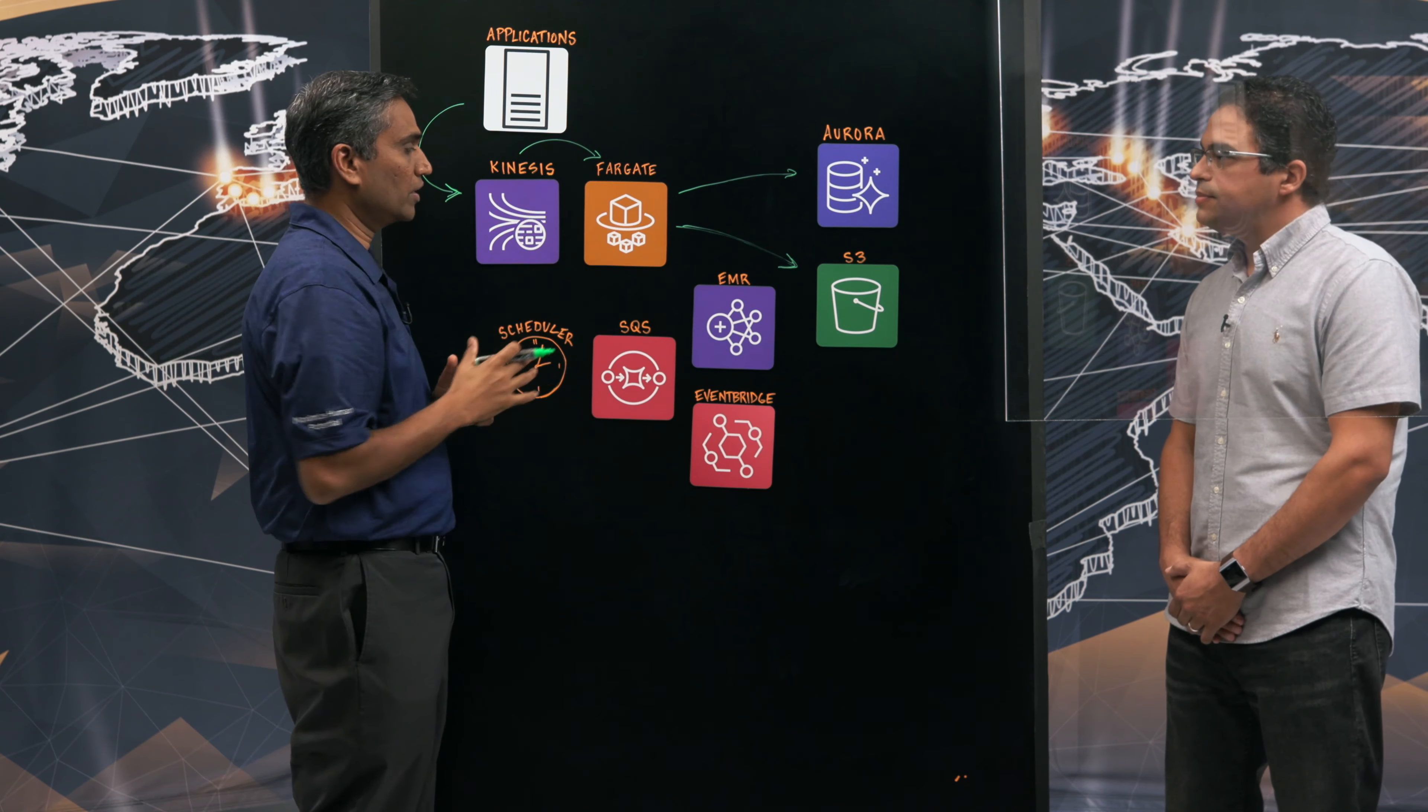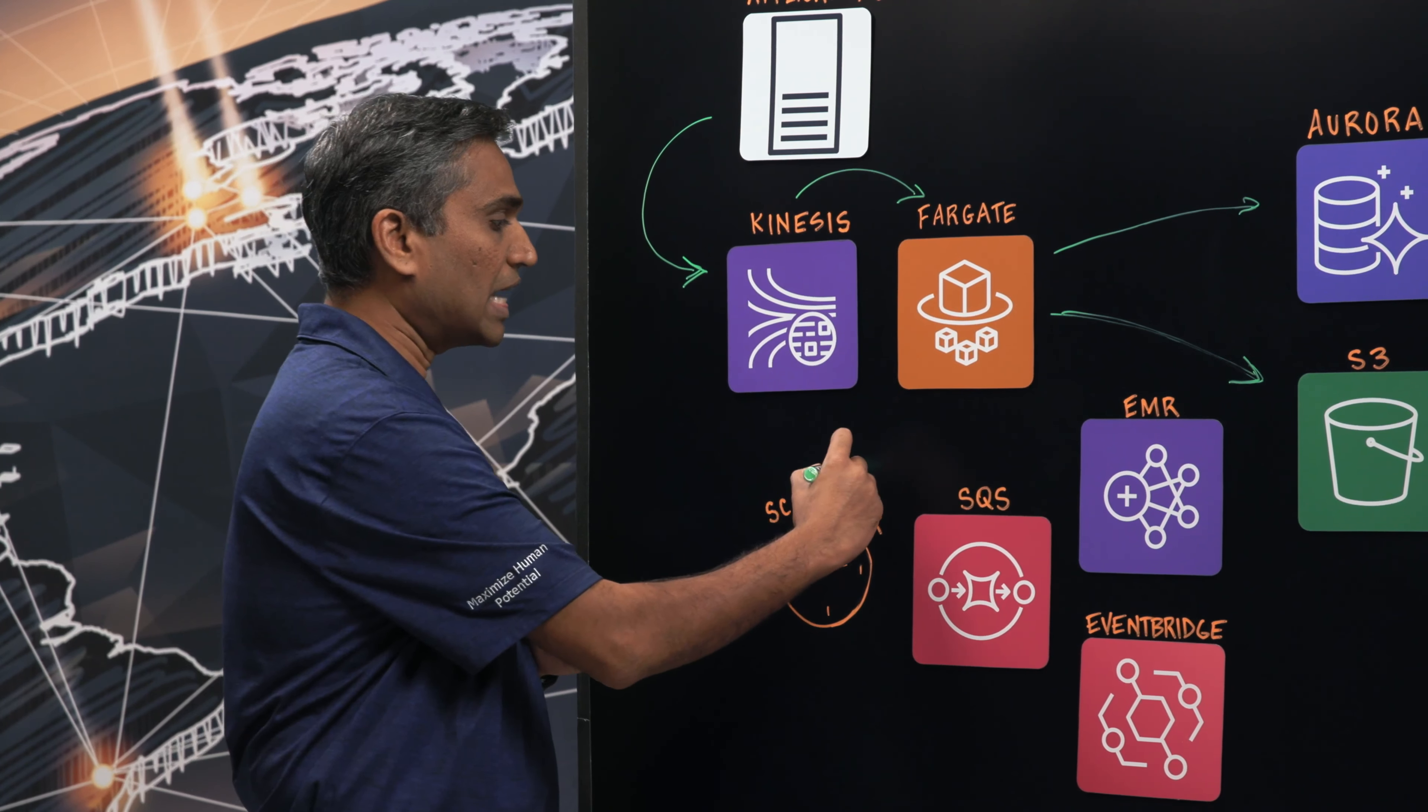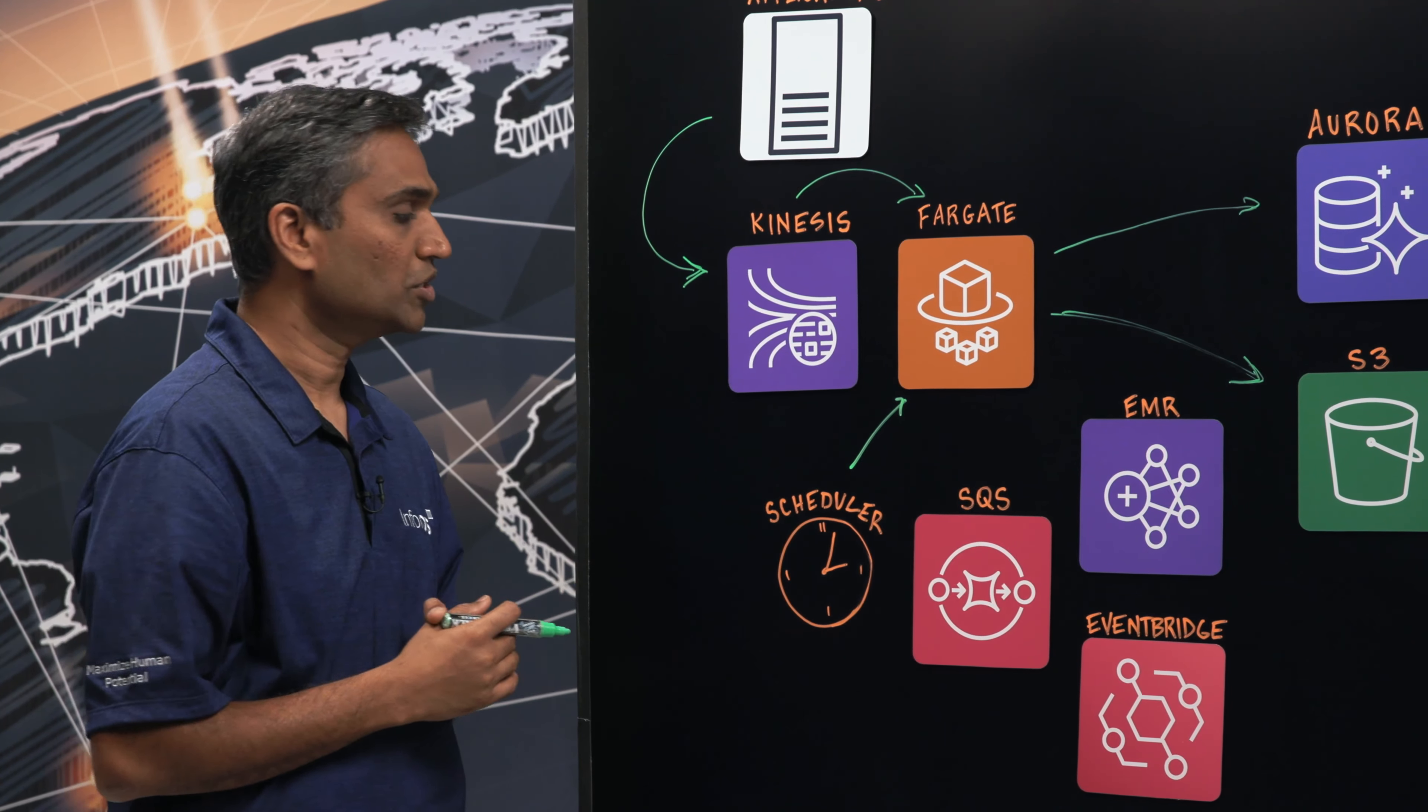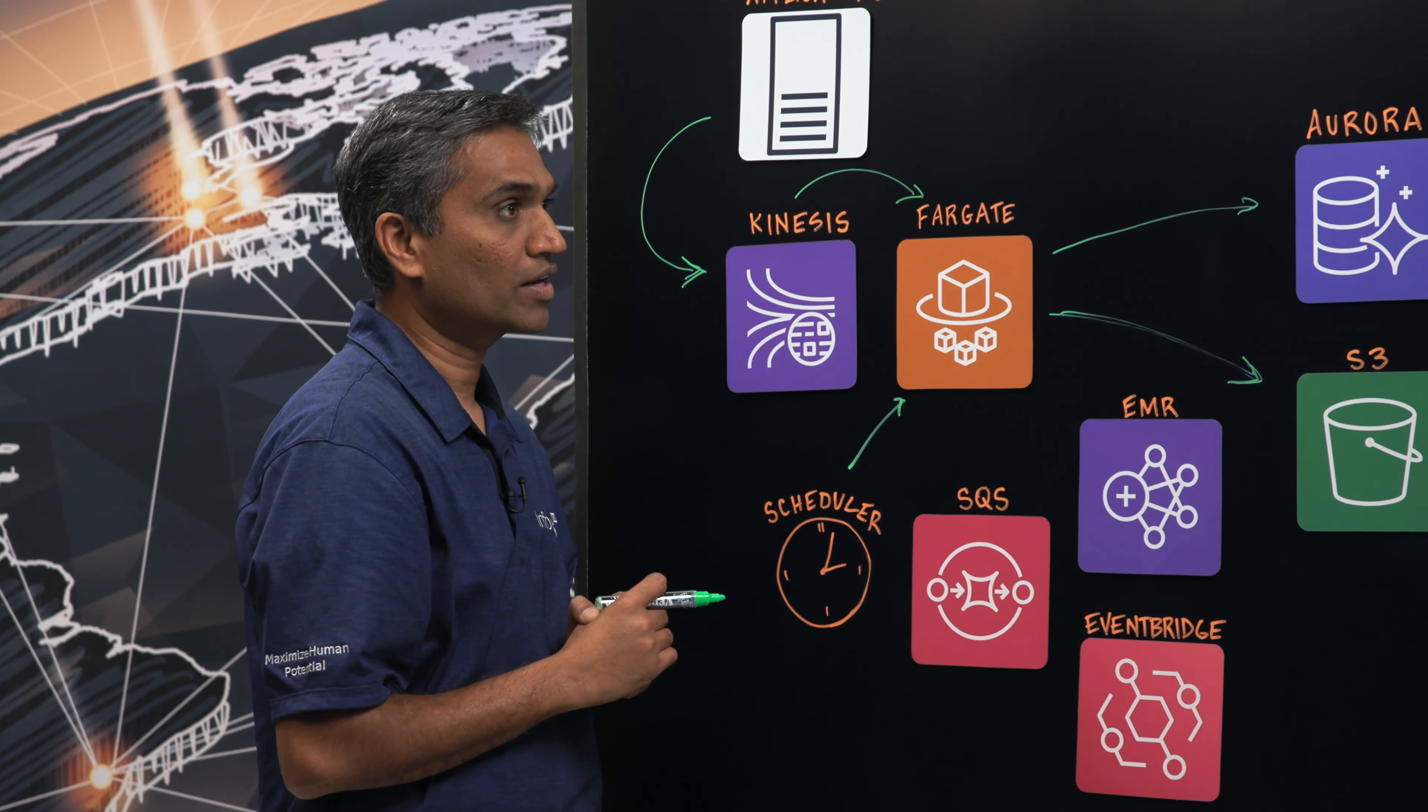So once the data is stored in Aurora and S3, we have scheduled events that are managed by our customers that triggers the analysis. So it can sometimes be hourly, sometimes it can be a few minutes. So those schedules are triggered on the analysis engine that runs on AWS Fargate.